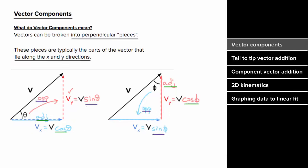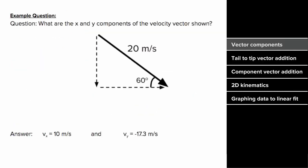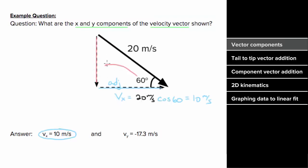So what would an example problem involving vector components look like? Say you had this question and you wanted to determine the x and y components of this velocity vector. Since the horizontal component is adjacent to the angle that we're given, we're going to write the horizontal component as the magnitude of the total vector, 20 meters per second, times cosine of the angle, which gives us 10 meters per second. And since the vertical component is opposite to this angle, we can write the magnitude of the vertical component as 20 meters per second times sine of the angle, which gives us 17.3 meters per second.